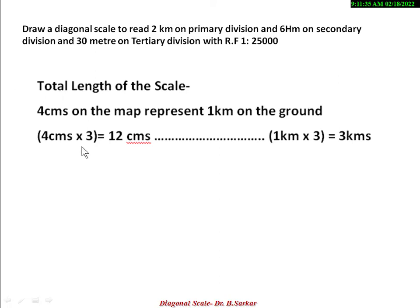So 4 cm into 3 equals 12 cm, and 1 km into 3 equals 3 km. If you multiply the map length by 3, then you should also multiply the ground distance by 3 to keep it consistent.